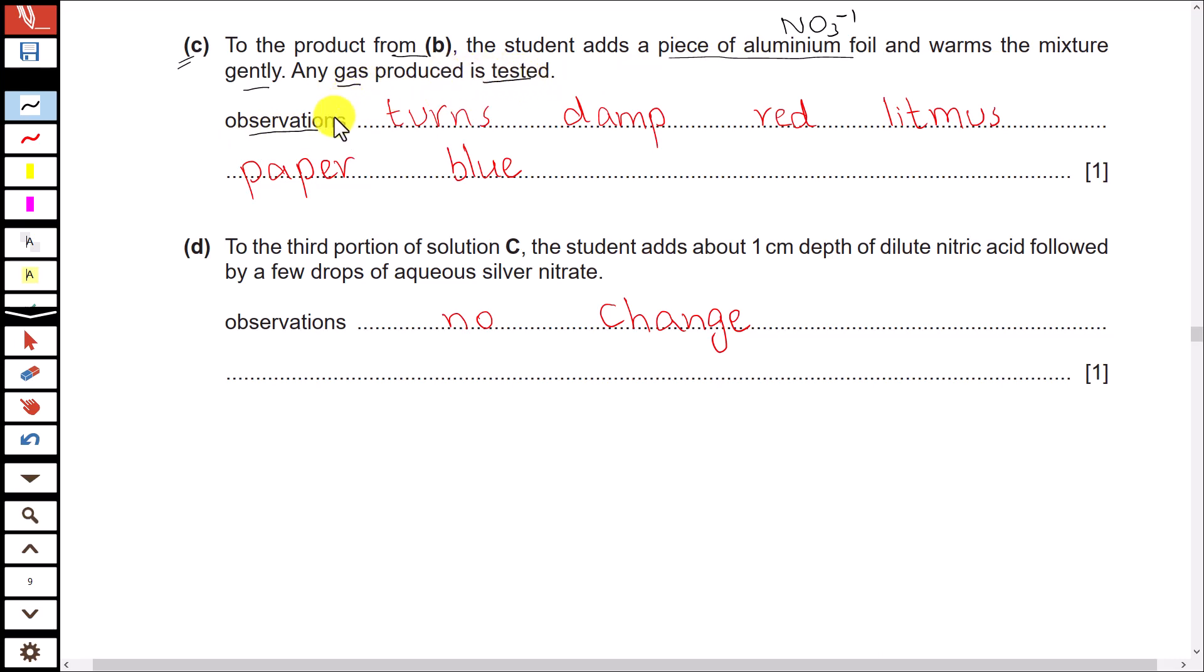Ammonia is a basic gas; it turns damp red litmus paper blue. Part D: to the third portion of solution, the student adds about one centimeter depth of dilute nitric acid followed by a few drops of aqueous silver nitrate. This is a test used to detect halides—either chloride, bromide, or iodide. And we know in the solution that we are testing there is no halide.